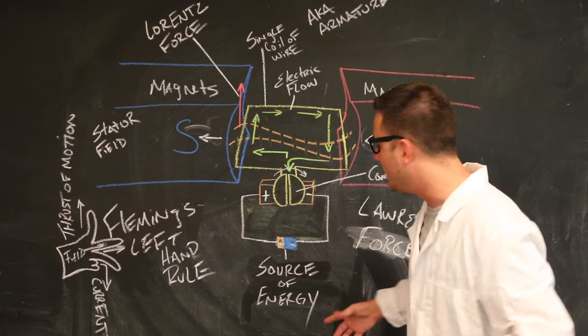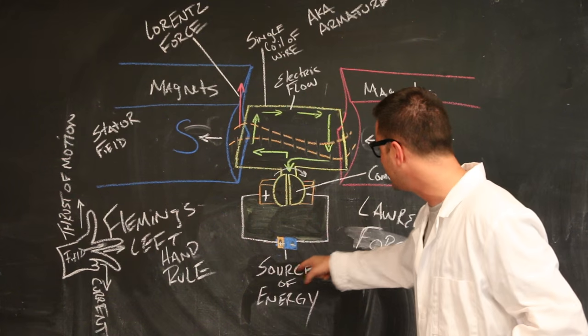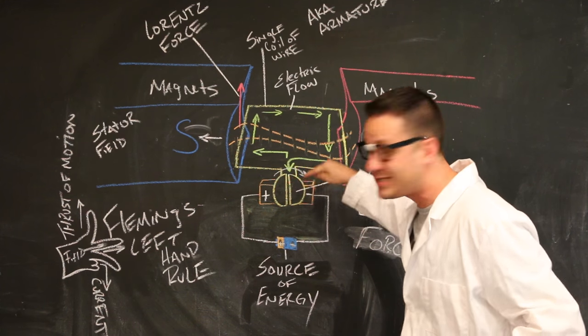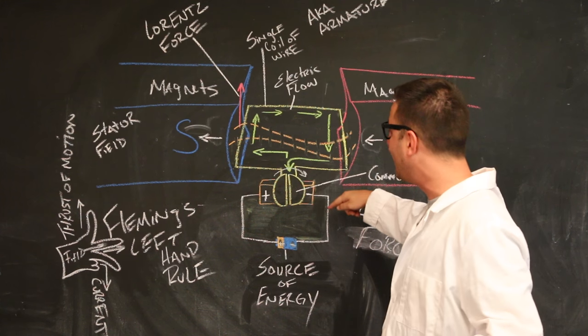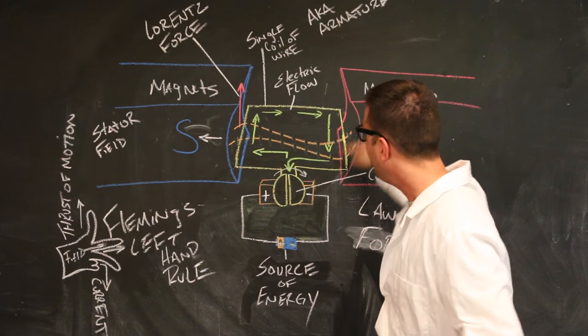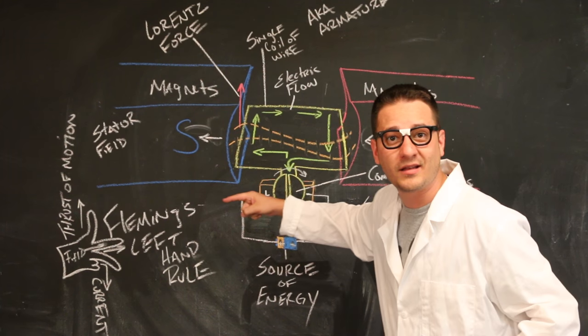Whoa. So basically, the electric current goes from the source of energy to the commutator ring and keeps the same source of energy on each side, rotating the coil in the same direction. Cool.